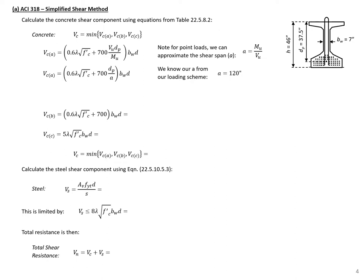The first thing we'll do is calculate shear using the ACI simplified shear procedure for pre-stressed concrete members. Here, V_C is equal to the minimum of three expressions: V_CA, V_CB, and V_CC, which are organized in a table in the code. One thing we know is that our shear span for beams with a point load equals M_U divided by V_U. We'll substitute A for M_U over V_U so we don't need to calculate shear and moments separately, and we know from our loading scheme that A equals 120 inches.